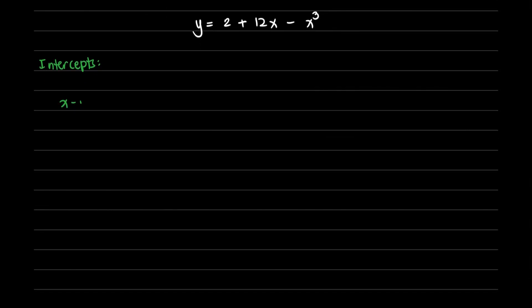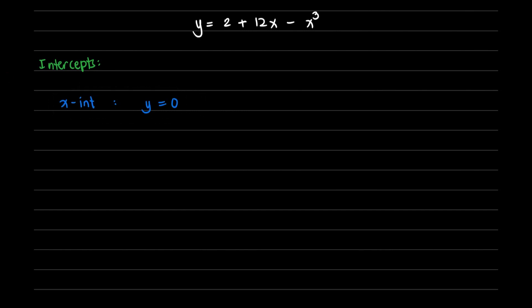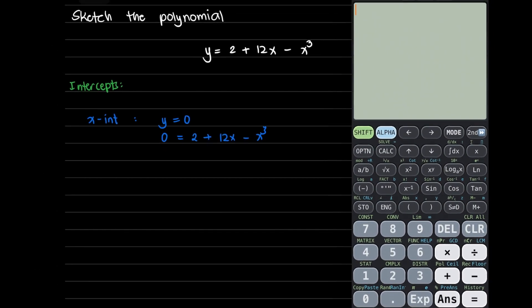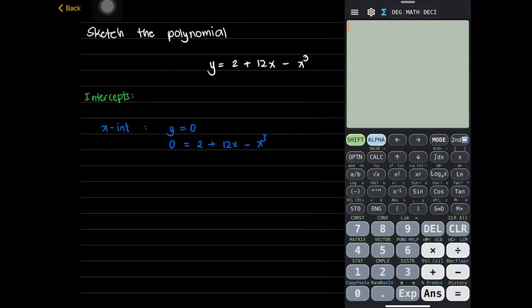To determine the x-intercepts, we're going to set y equal to 0. If y is equal to 0, then this will now be 0 equals 2 plus 12x minus x cubed. And solving for the roots of x, you can use your calculator to do so.